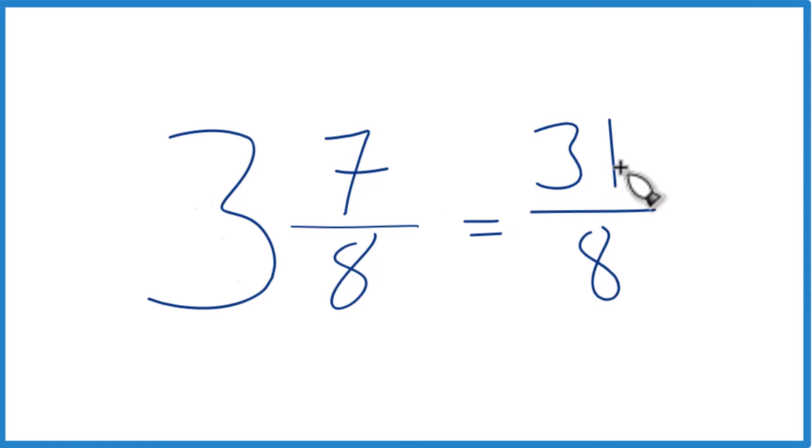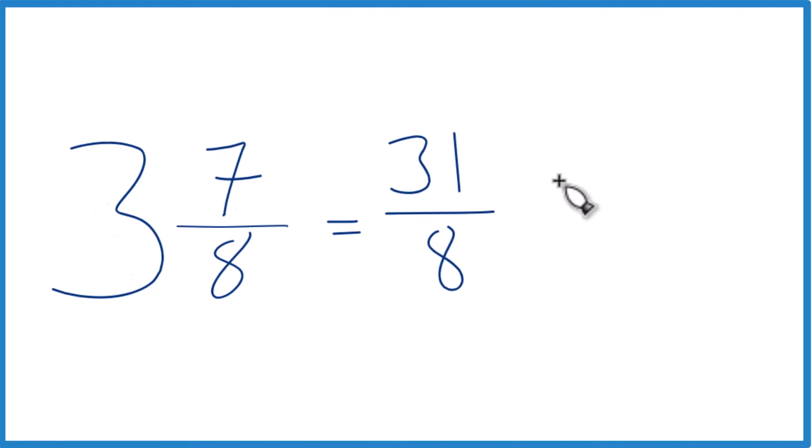We can even check our work here, because 8 goes into 31. 8 times 3 equals 24 with 7 left over. And then we just bring the 8 across, and we have what we started with, so we know we did it right.